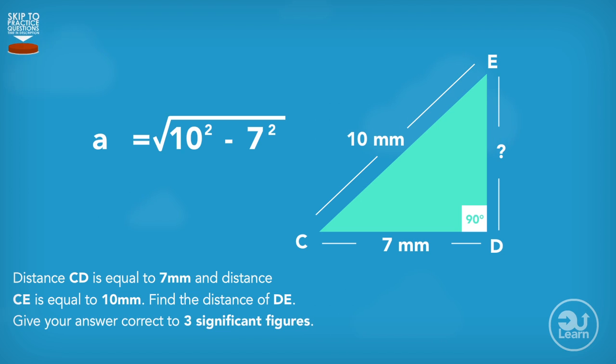Now we put in the values into the rearranged formula and simplify like before. To find the value, all we do now is square root 51 with our calculators. The value that is presented on your calculator should be this long decimal number. Now remember, the question asked to give the answer correct to three significant figures, so the final values are the first three numbers of the answer, which is 7.14mm.